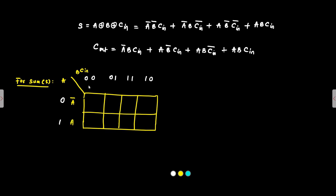So the columns are labeled: A-bar side and the columns are B-bar·C-in-bar, B-bar·C-in, B·C-in, and B·C-in-bar.